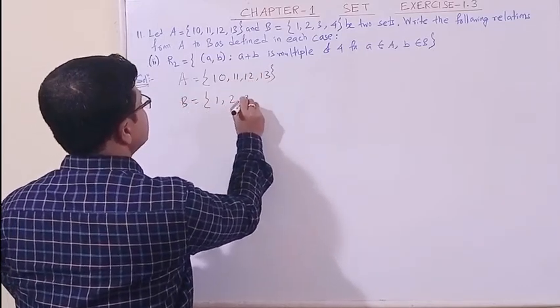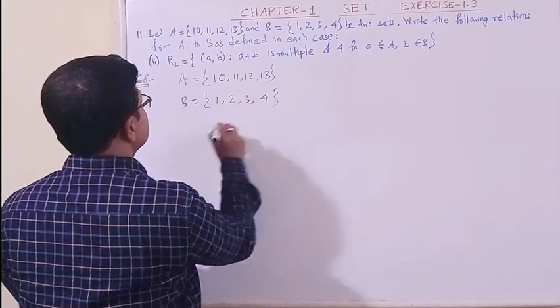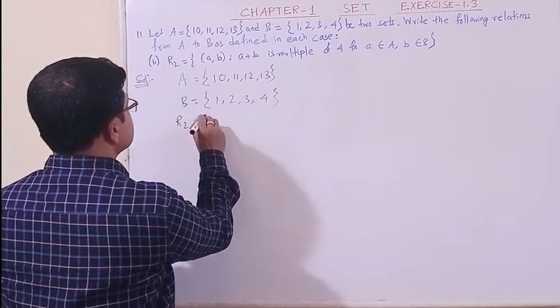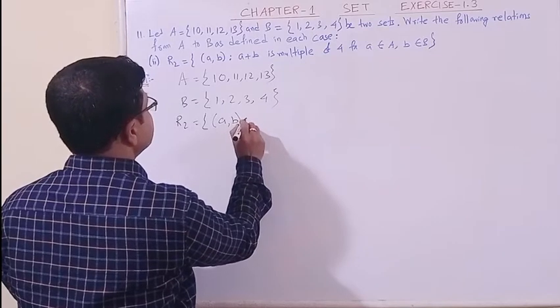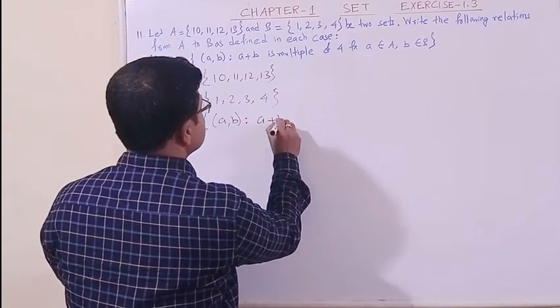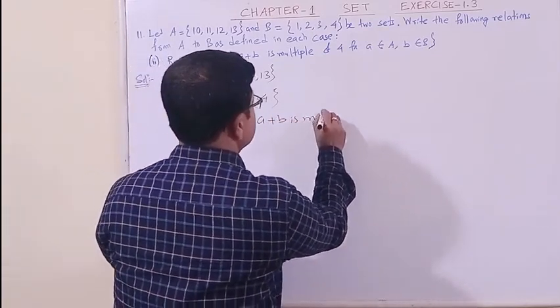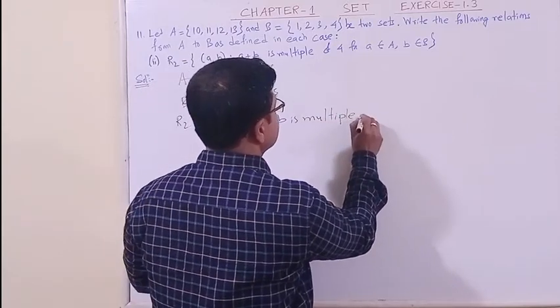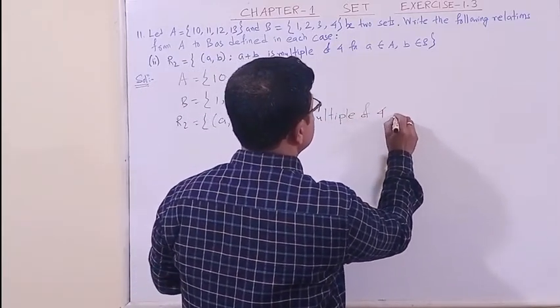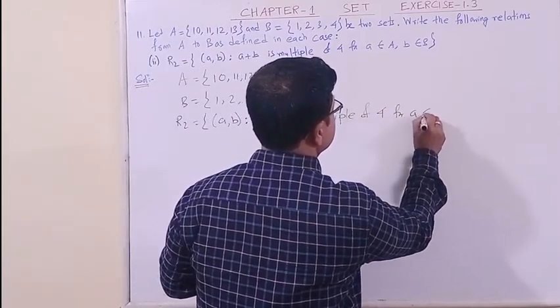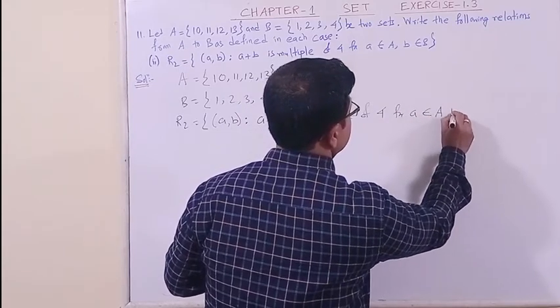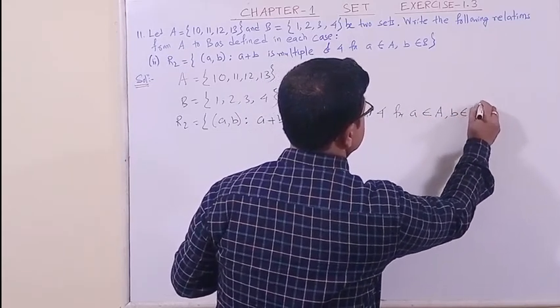The elements are 1, 2, 3, 4. Again, let us note down the relation. The ordered pair is (a, b). A plus b is a multiple of 4 for a belongs to A and b belongs to set B.